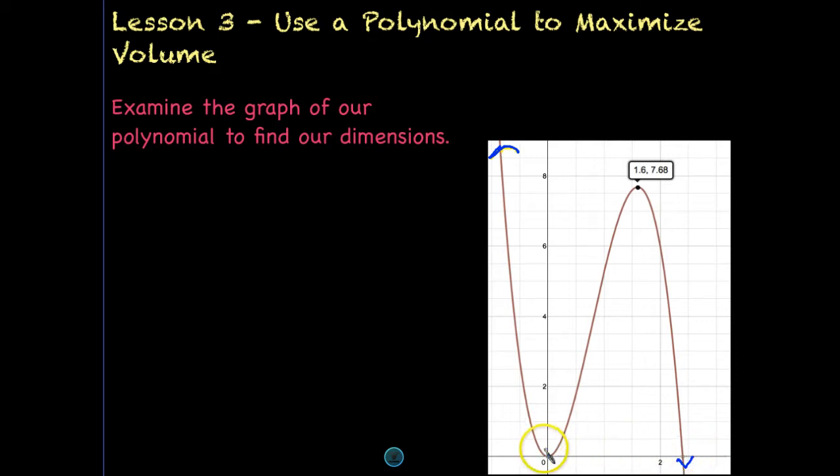We don't care about this part of the cubic and we don't care about this part of the cubic. It doesn't really make sense for our context. All we really care about is from 0 to whatever this number is right here. That's the only domain that's really important based on this context. Obviously, negative volumes and negative numbers wouldn't make any sense. Now remember that our problem is asking us to maximize volume. What is our maximum and what are our dimensions that could get us there?